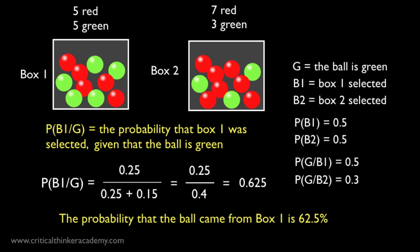This example illustrates how the Bayes' calculation models learning from experience. Before we knew the color of the ball, we were completely ignorant about which box was chosen, and the probability of it coming from box 1 was just 50 percent, reflecting this ignorance.